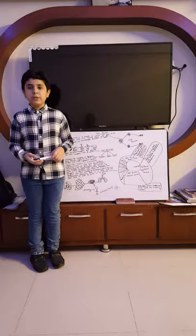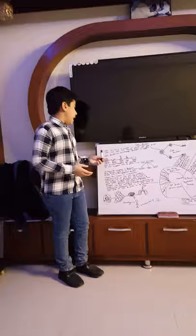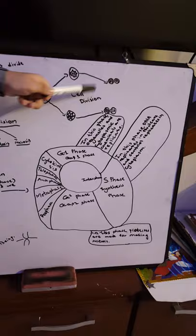Cell division is a process in which a cell gets divided and two cells are formed from one cell. This is the figure which I made for you. One cell is divided into two cells, and two cells are divided into four cells.